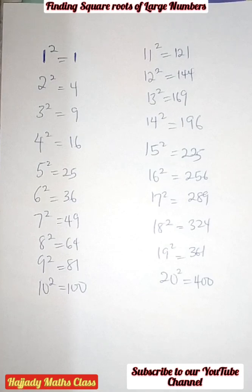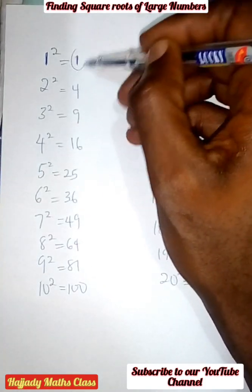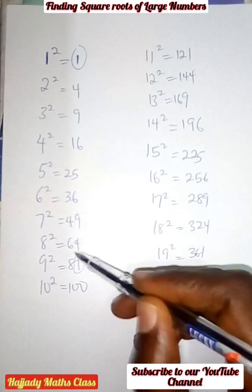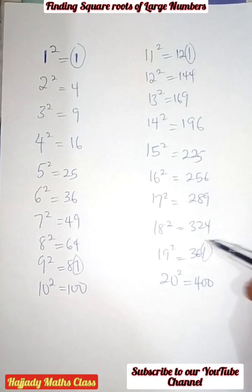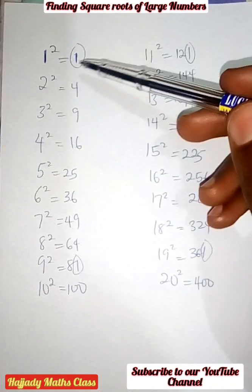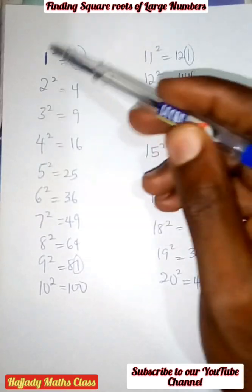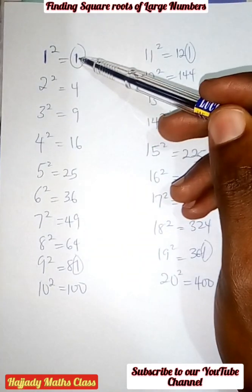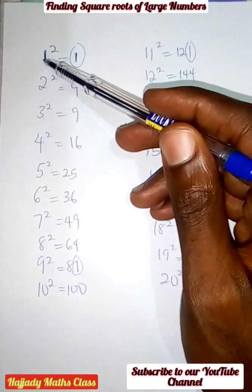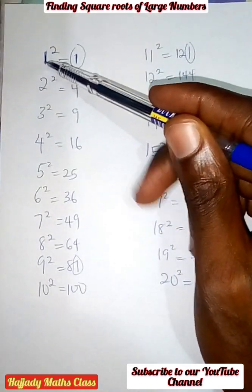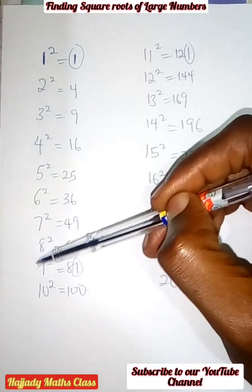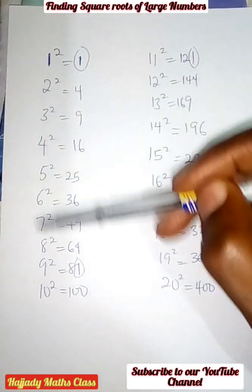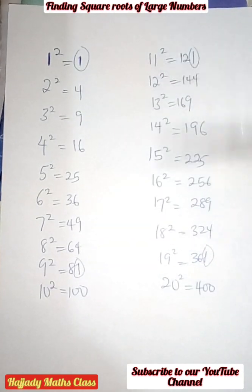Now, there are some basic things we need to know before we proceed. If you look at the values that have one as the last digit, we can see one, eighty-one, one twenty-one, and three sixty-one. The perfect squares of one and nine have one as the last digit. So anything that ends with one — we have one and nine, we have eleven and nineteen — the combination of these will surely give one as the last digit.